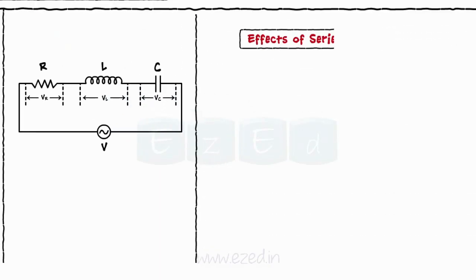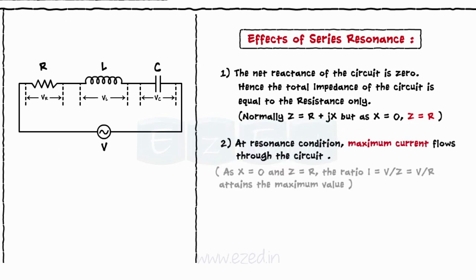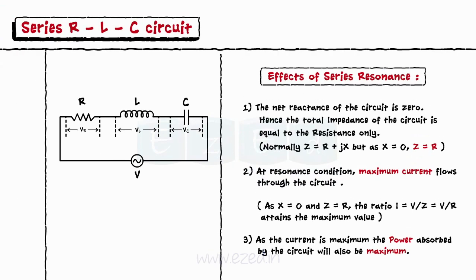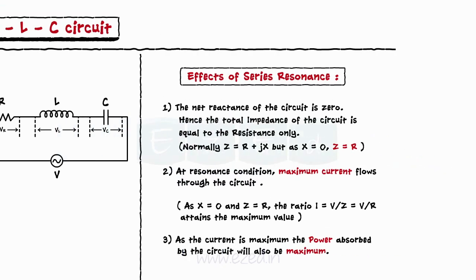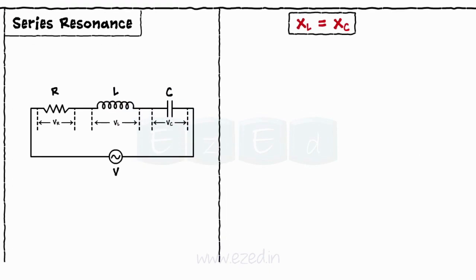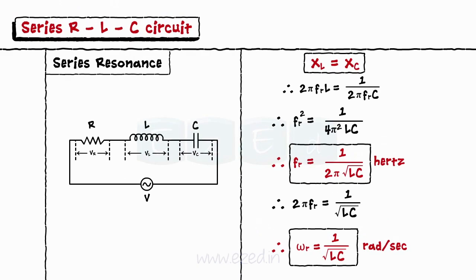There are some effects of resonance on the circuit: the net reactance becomes zero, so Z equals R only, and hence the maximum current flows through the circuit. Also, the power absorbed by the circuit is maximum. At resonance, XL equals XC, so 2·pi·F·L equals 1 upon (2·pi·F·C). Writing in terms of resonant frequency FR, we get FR equals 1 upon (2·pi·root(LC)), or omega_R equals 1 upon root(LC).